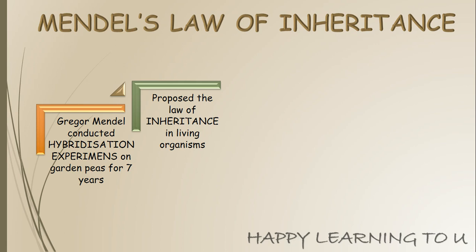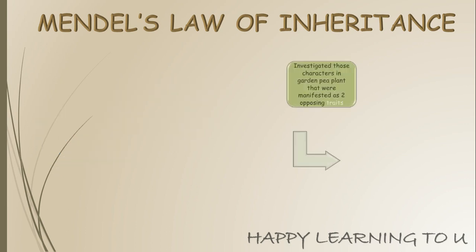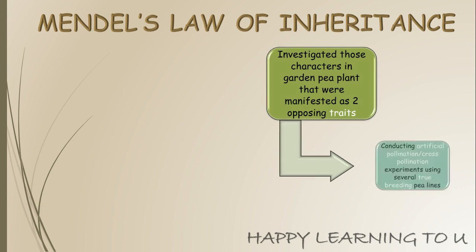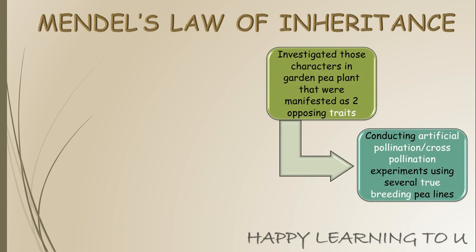As I mentioned in my previous video, you can have the link on top — Gregor Mendel was a person who introduced this law of inheritance by conducting hybridization experiments on garden pea plants for seven years, and ultimately he proposed this law of inheritance in living organisms. In his experiments, he investigated those characters in garden pea plants that were manifested as two opposing traits by conducting artificial cross-pollination experiments using several true breeding pea lines.